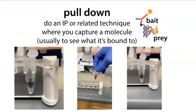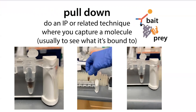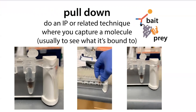Pull down is when you do an IP — an immunoprecipitation or a related technique — where you capture one molecule, which you call the bait, usually to see what it's bound to, the prey. We often do it on magnetic beads, where the beads have something that sticks to your bait. It captures your bait, you wash everything else off, and then you get your prey.